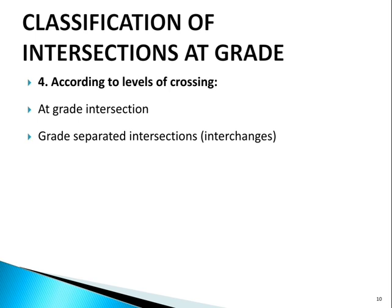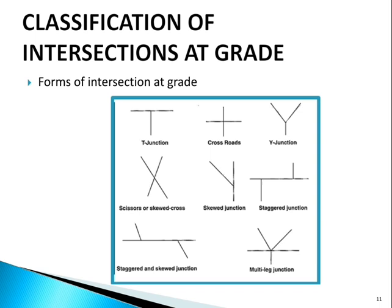All forms of intersection at grade include T-junction, crossroads, Y-junction, scissors or skewed cross, skewed junction, staggered junction, staggered and skewed junction, and multi-leg junction.